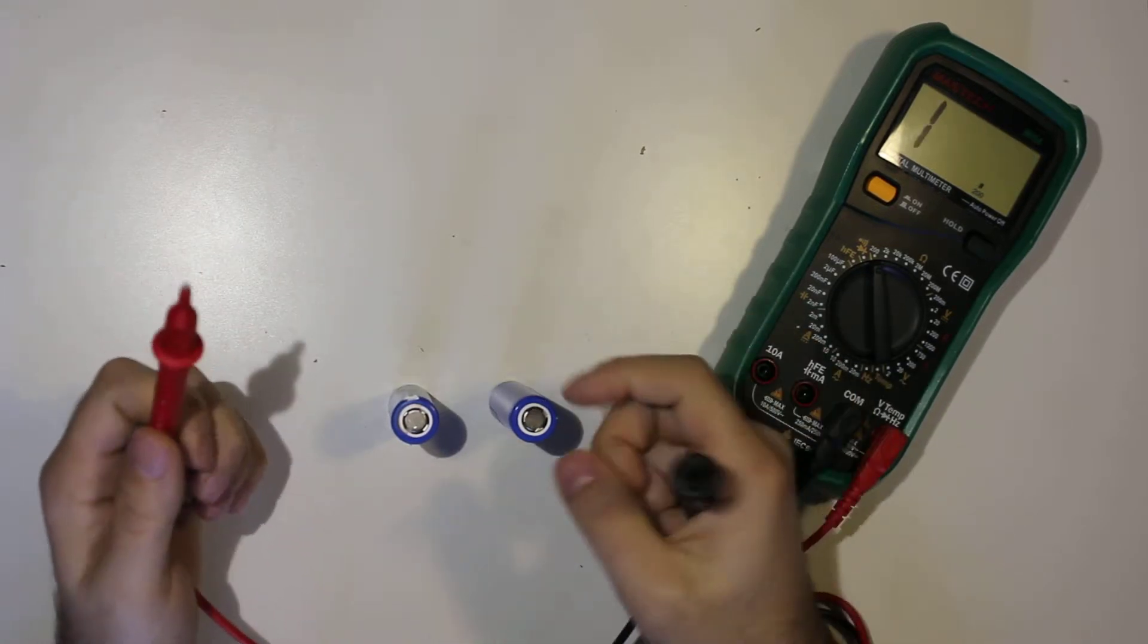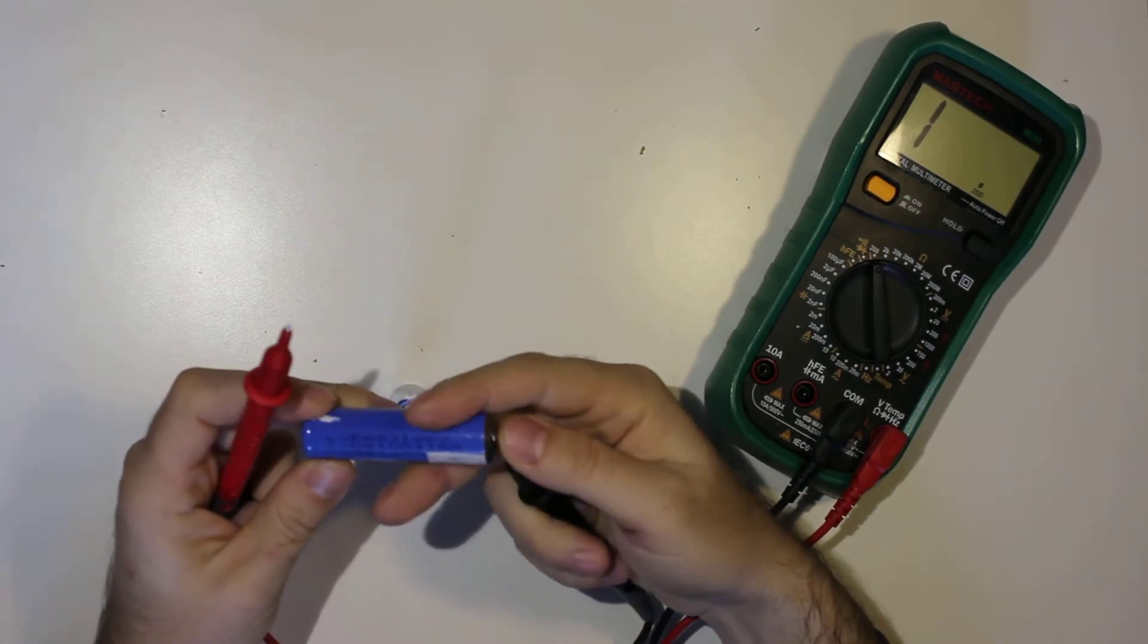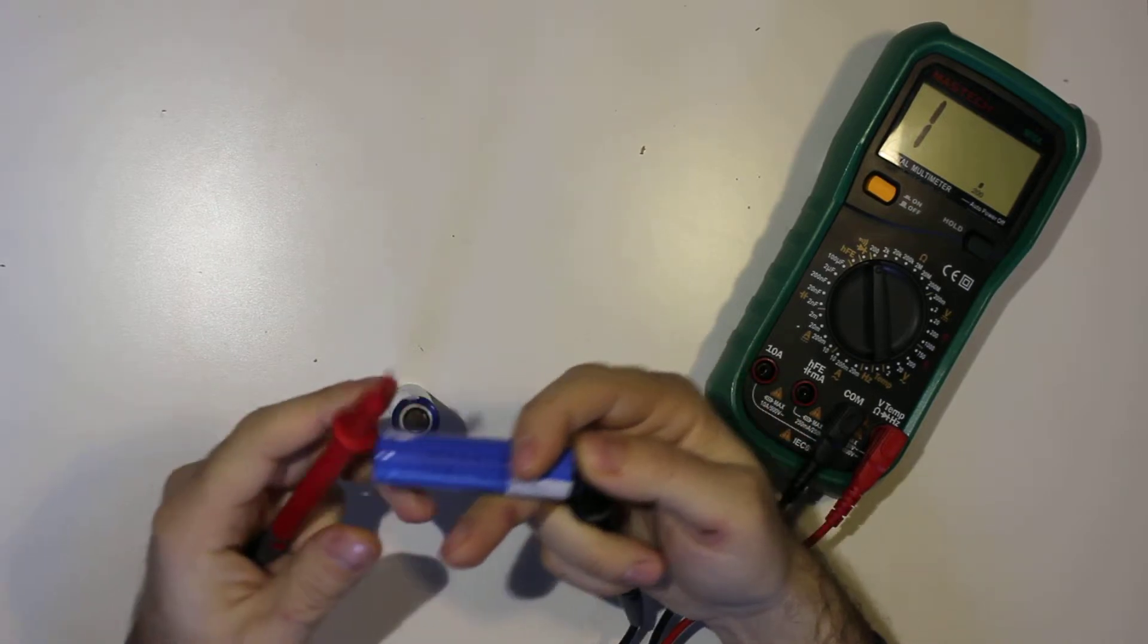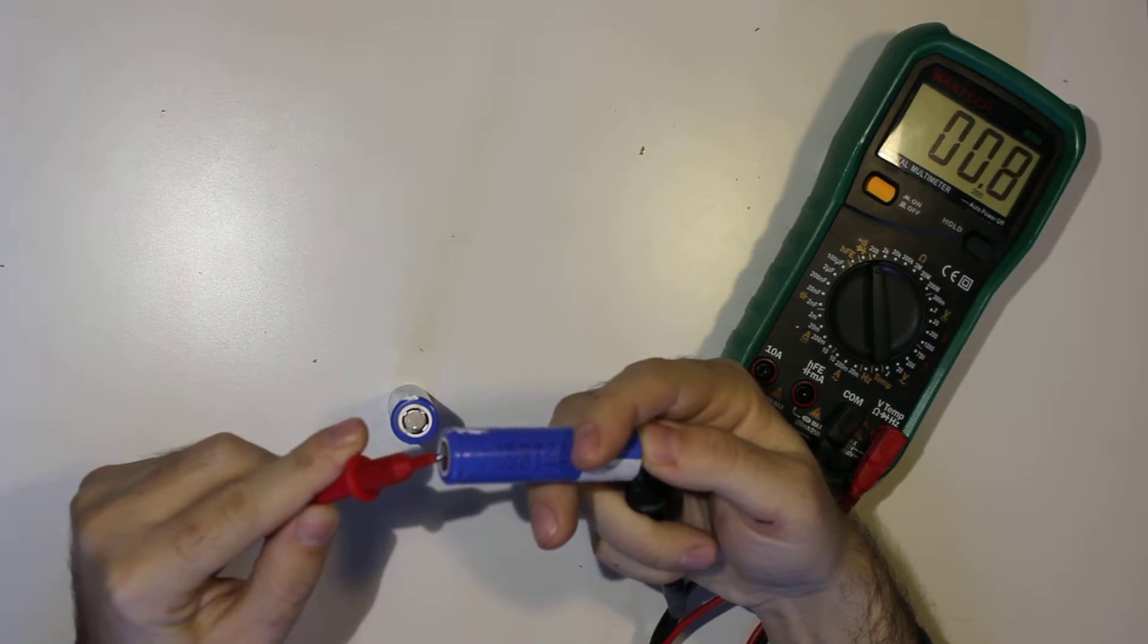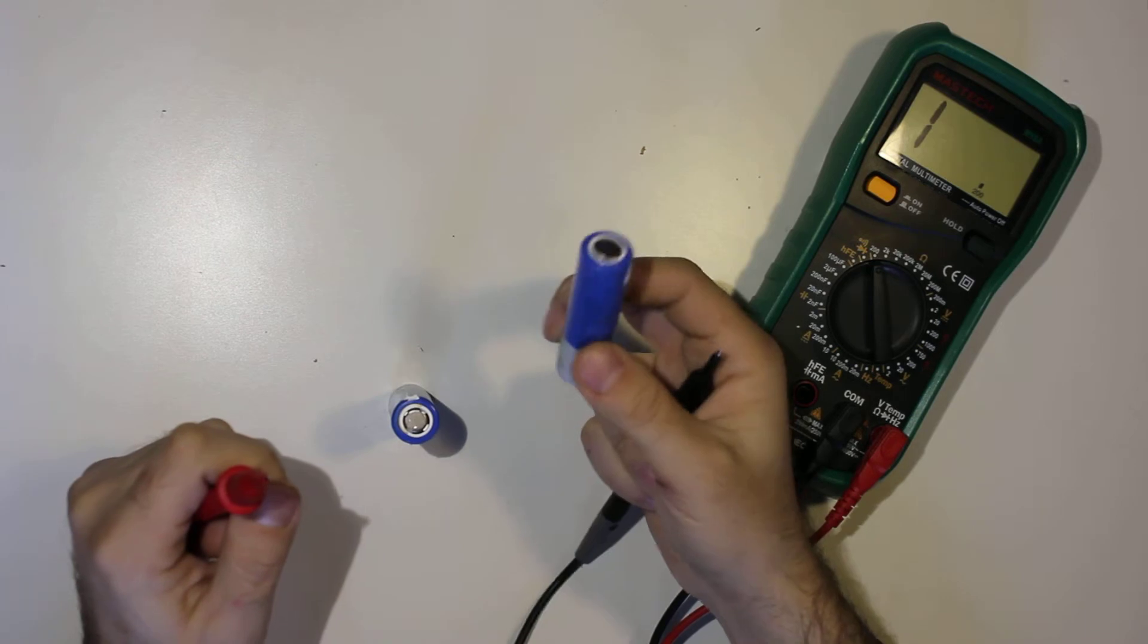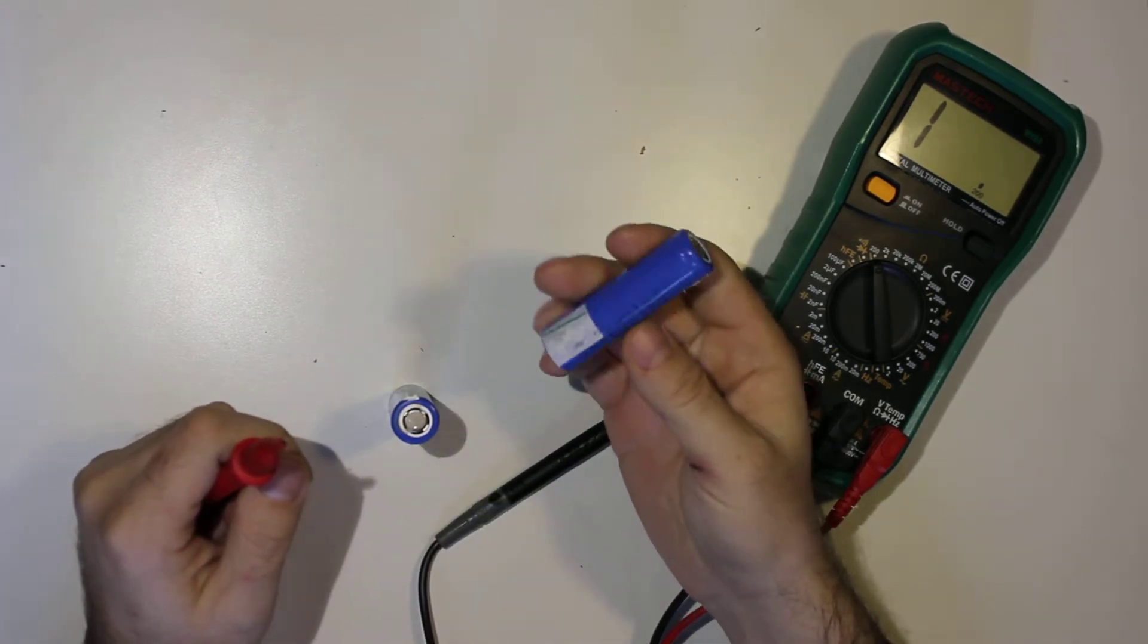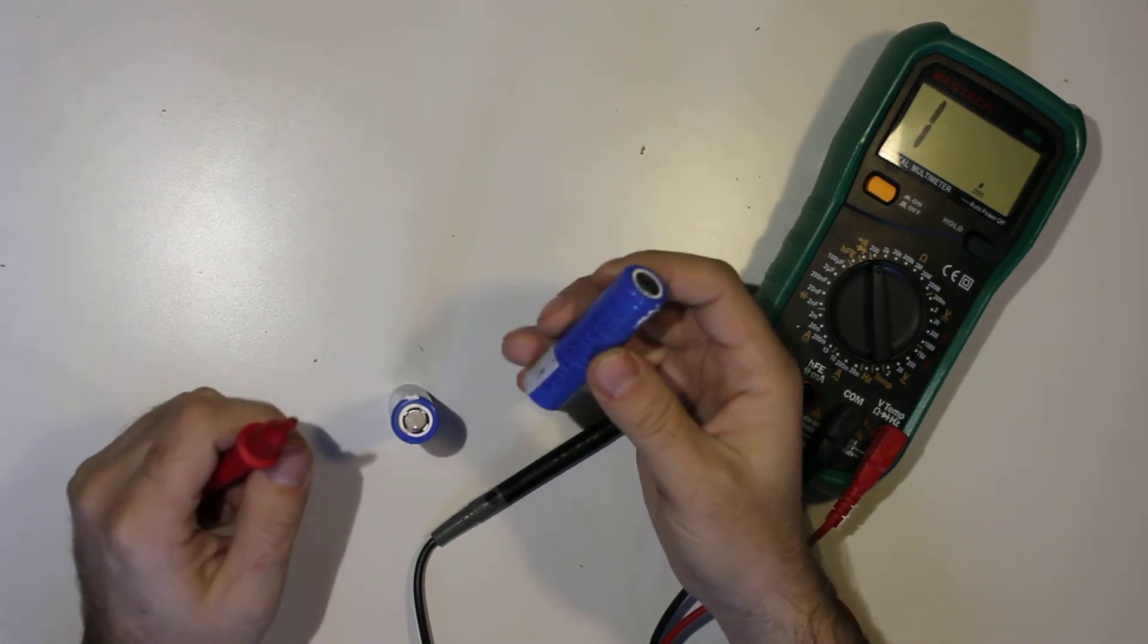So look at this - it's the same. This battery actually right now behaves as a straight wire, like no resistance, nothing at all. The electricity just goes through the battery and that's it.